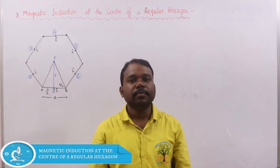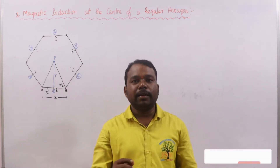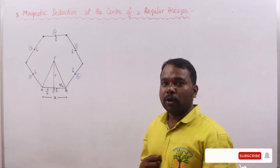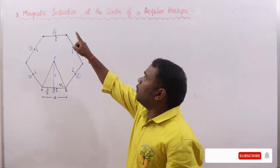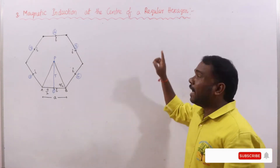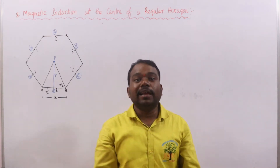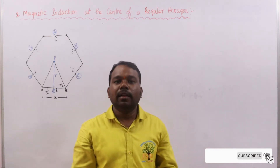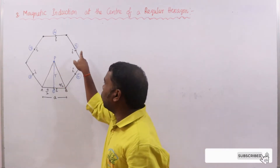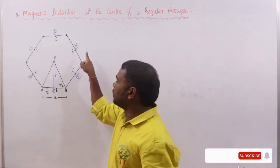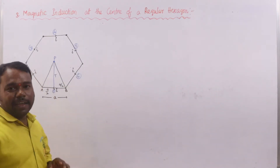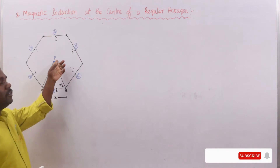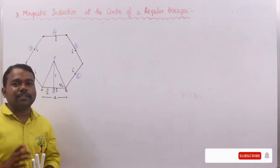Hi viewers, welcome to JSM. In the previous video I explained about magnetic induction at the center of an equilateral triangle. Now in this video I am going to explain about one more important application: magnetic induction at the center of a regular hexagon. The center is point P, and at point P we need to find the magnetic induction.